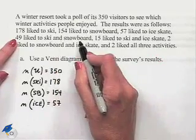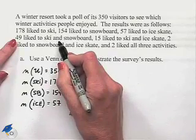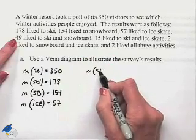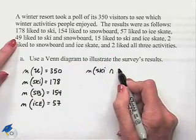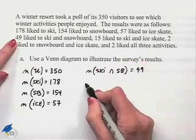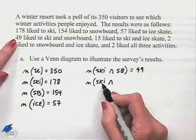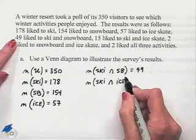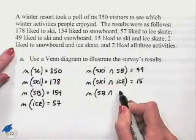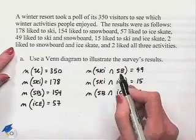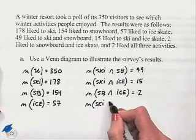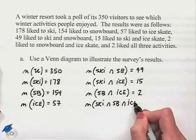49 like to ski and snowboard. Because we're connecting these with an "and" statement, this means we're looking at the intersection of two sets. So the number in the intersection of skiing and snowboarding equals 49. The number in the intersection of skiing and ice skating equals 15. The number in the intersection of snowboarding and ice skating equals 2. And 2 liked all three activities — that's the intersection of ski, snowboard, and ice skating, which equals 2.